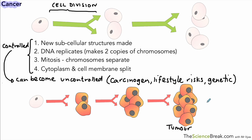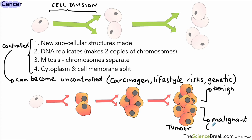We can divide tumours into two main kinds. The first kind is what we call benign — benign tumours. And the second is what we call malignant. It's the malignant ones that we refer to when we refer to cancer, so the malignant tumours are the cancers. These are much more dangerous than the benign tumours. Benign tumours we just tend to describe as a group or growth of abnormal cells.